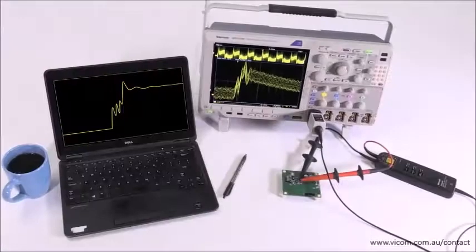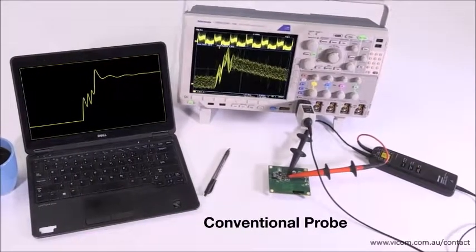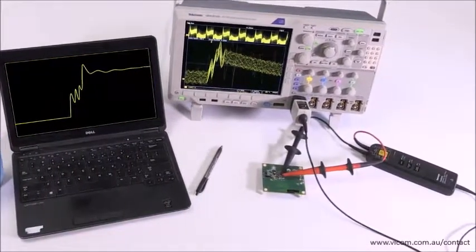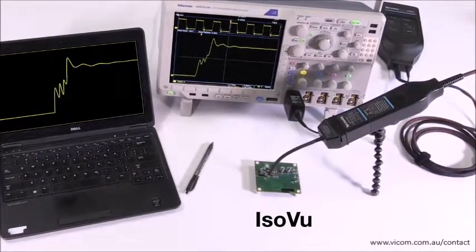When you need to measure differential voltage signals in the presence of common mode interference, today's measurement systems are inadequate. But ISOVUE allows you to see what the true differential signal really looks like.